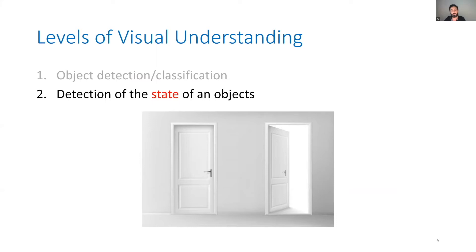But let's talk about this other problem that comes right after that: the state of an object. When you see a door, it has different states — open and closed and so on. We currently don't have systems that understand these things very well. You can train a model that understands a specific door being open or closed, but they don't really understand the concept of being open — because openness can refer to a jar, or a window, or a car door being open. You cannot possibly train a model for every single one of those classes, so you have to understand the concept of openness. This is about the state of an object.